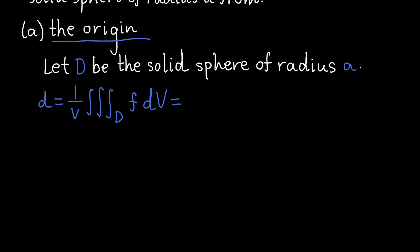Alright, so this is 1 over V. What's V? So V is equal to 4 over 3 pi a cubed, which is just the volume of a sphere. And this implies that 1 over V is 3 over 4 pi a cubed.